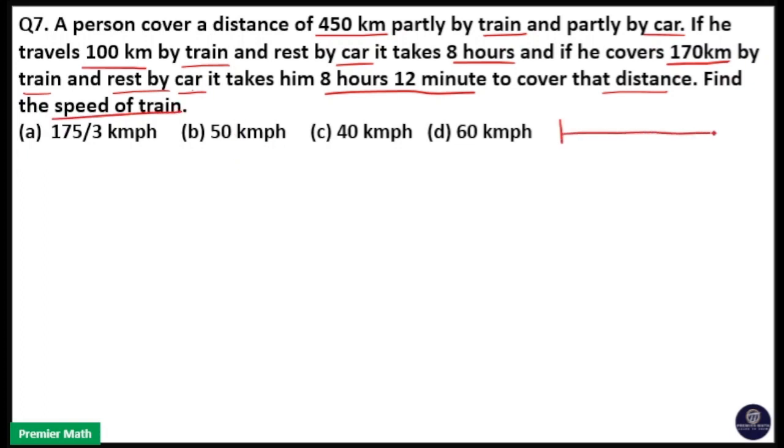A person covers total 450 km for a journey. If he covers 100 km in train and remaining 350 km in car, he will take total 8 hours to complete this journey.